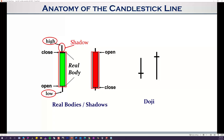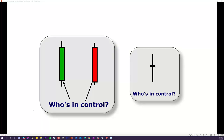The candlestick line has a rectangular portion called the real body, which is simply the relationship between the open and the close. If the real body is green, the close is at the top and the open is at the bottom. A red real body shows the close is under the open — same data as a bar chart, but much more visually informative. The lines above and below the real body are called shadows or wicks. When a candlestick line doesn't have a real body — just horizontal lines — the open and close are the same. Those are called doji.